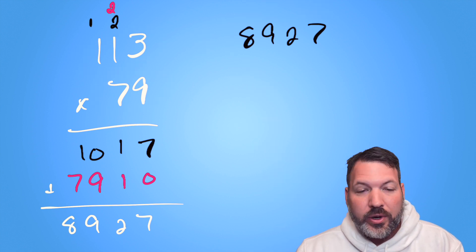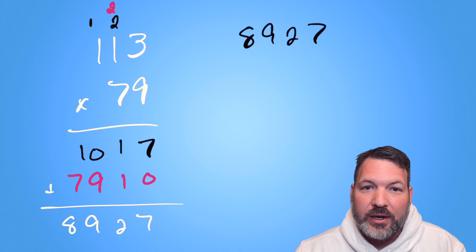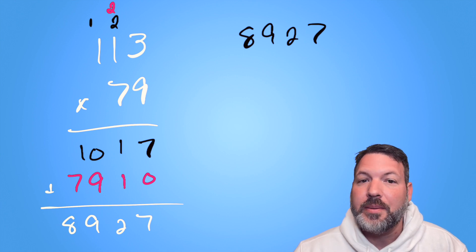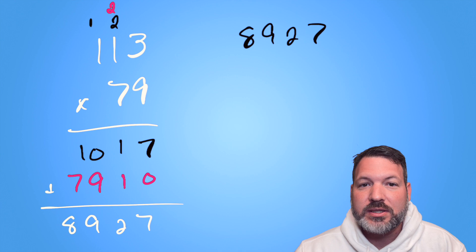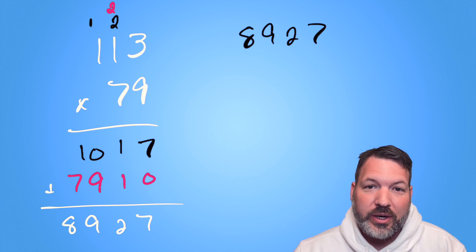So now we have to ask, okay, three doesn't go into 8,927. Will five go into 8,927? Will seven? Will 11? Will 13? And we end up having to check every single prime number to see whether or not it's a factor of 8,927. Every single prime number up to roughly the square root of 8,927.